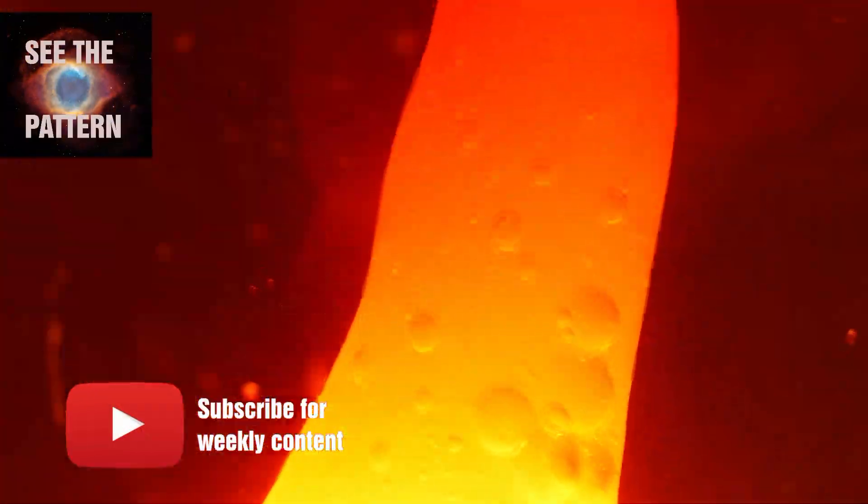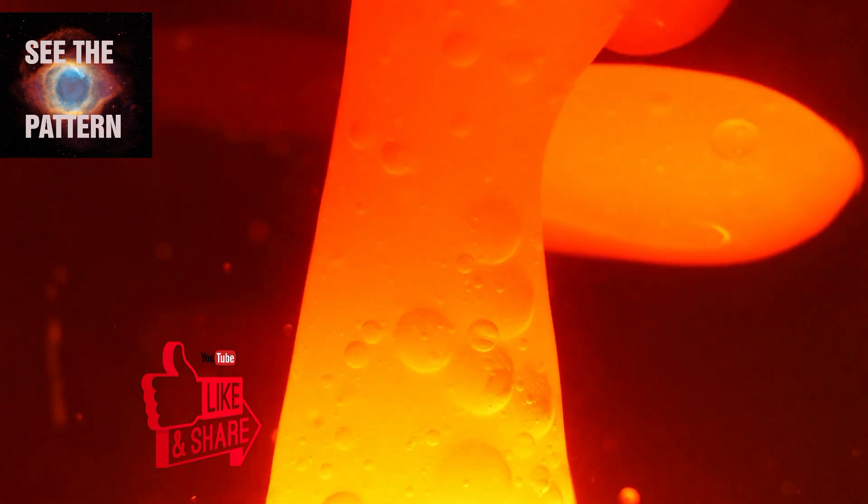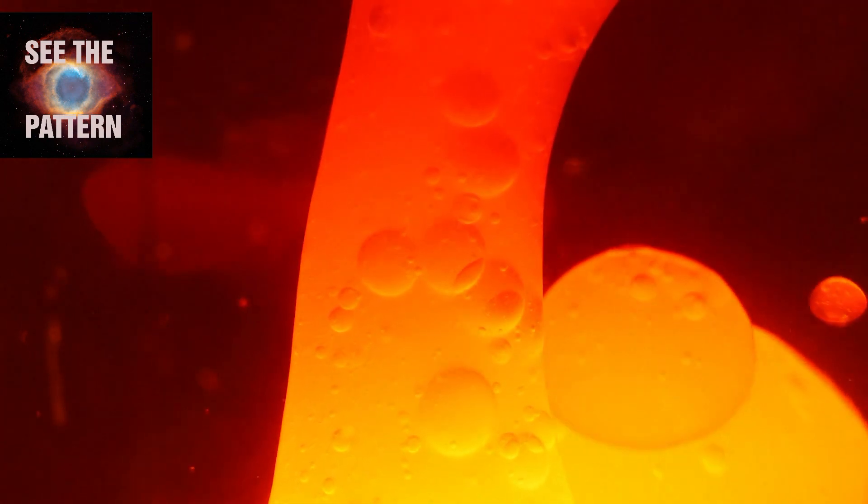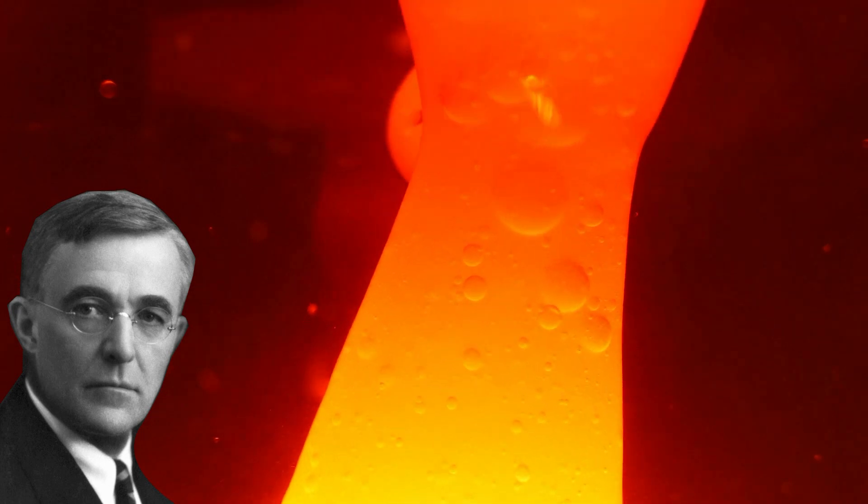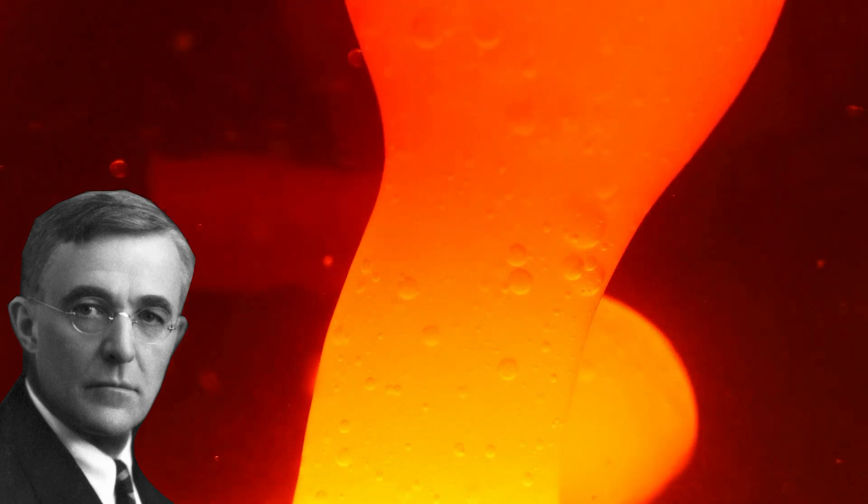Plasma comes from the Greek word meaning moldable substance. It is the fourth state of matter and was first described by the chemist Irving Langmuir in the 1920s. Plasma has properties and behaviors unlike any of the other states and can exist in a variety of different forms.